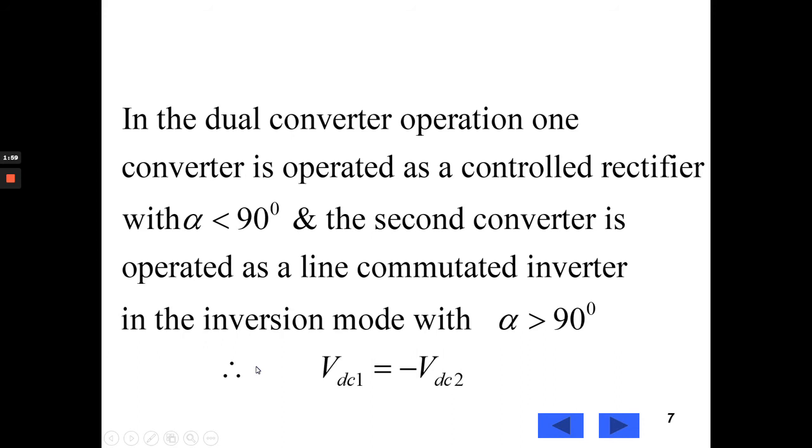In the dual converter operation, one converter is operated as a controlled rectifier with alpha less than 90 degrees and the second converter is operated as a line commutated inverter in the inversion mode with alpha greater than 90 degrees.